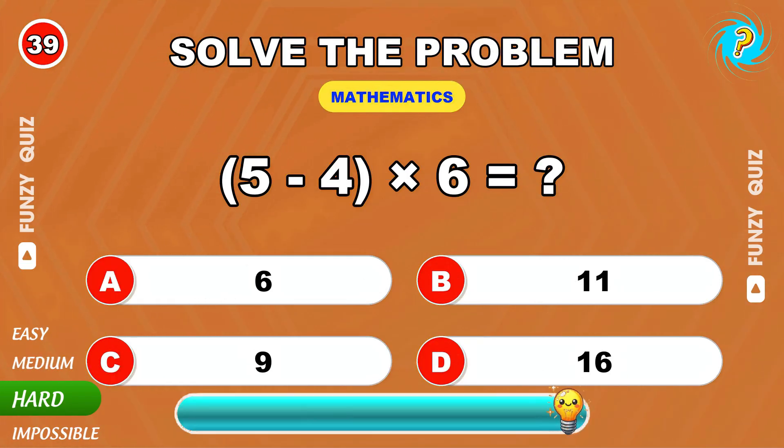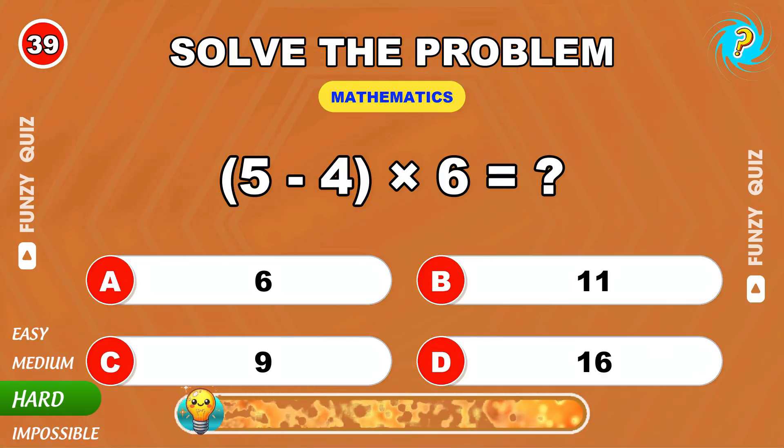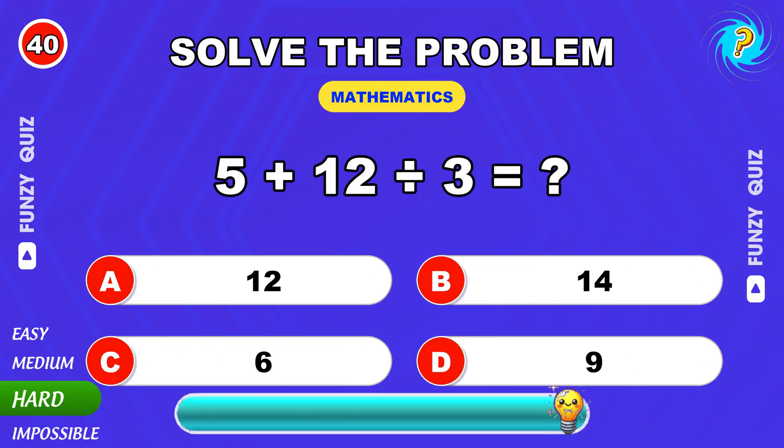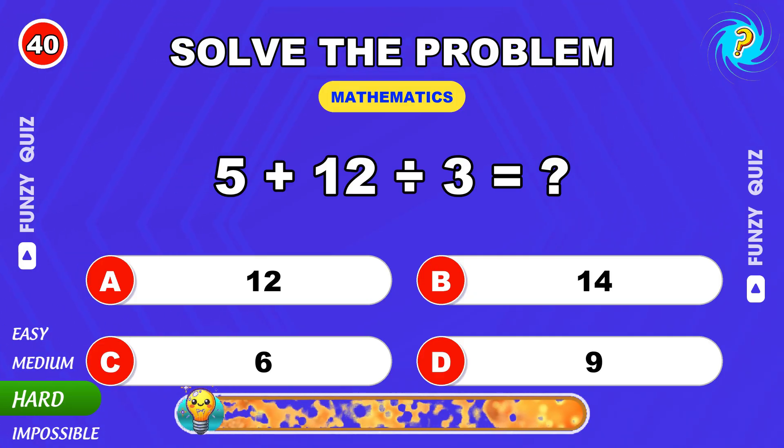Calculate 5 minus 4 times 6. 6. 5 plus 12 divided by 3. 9.